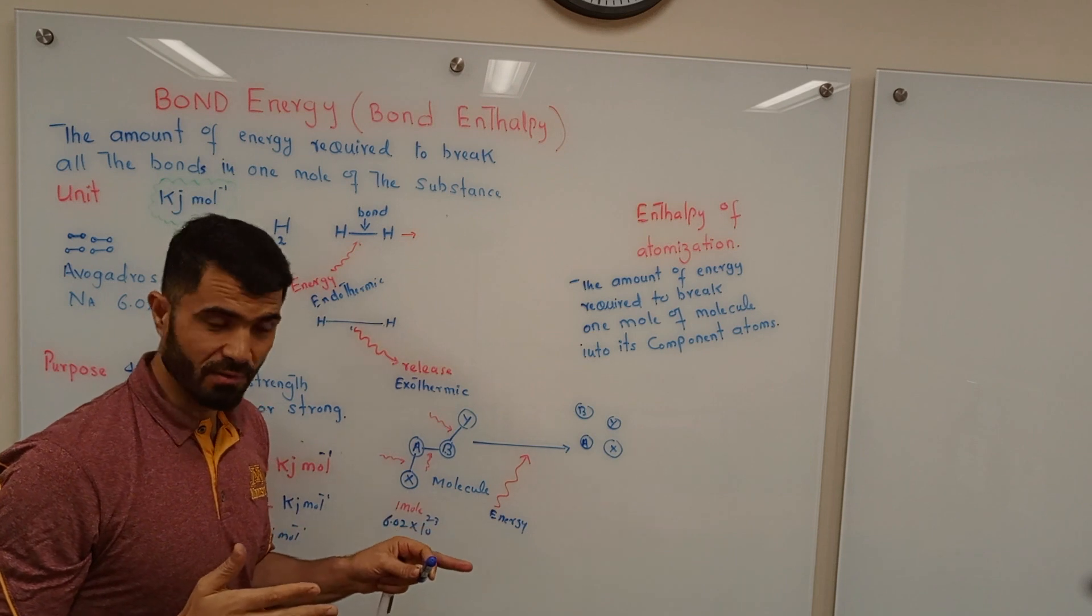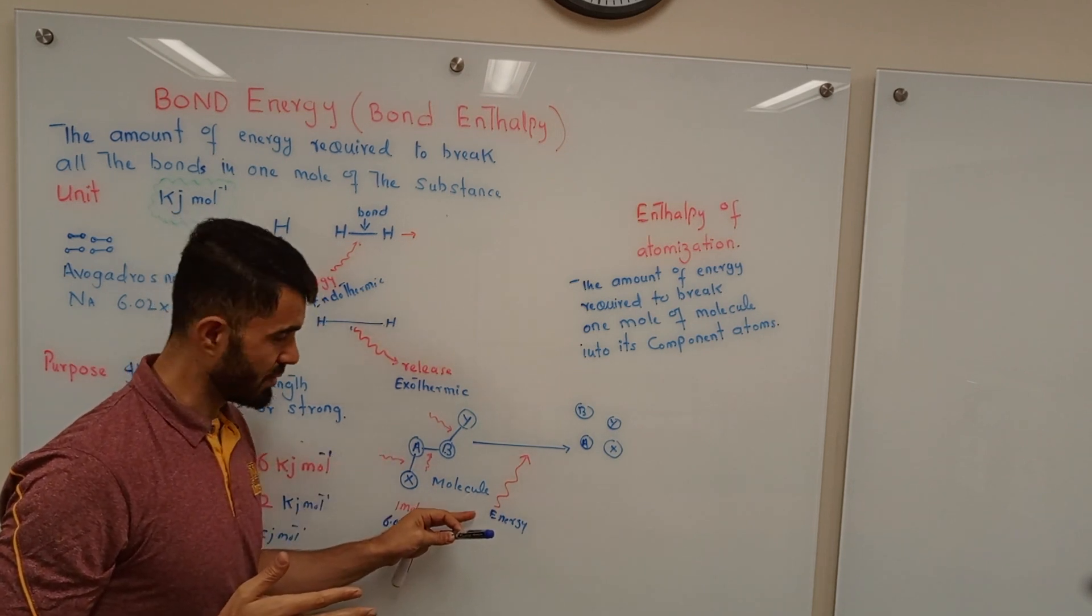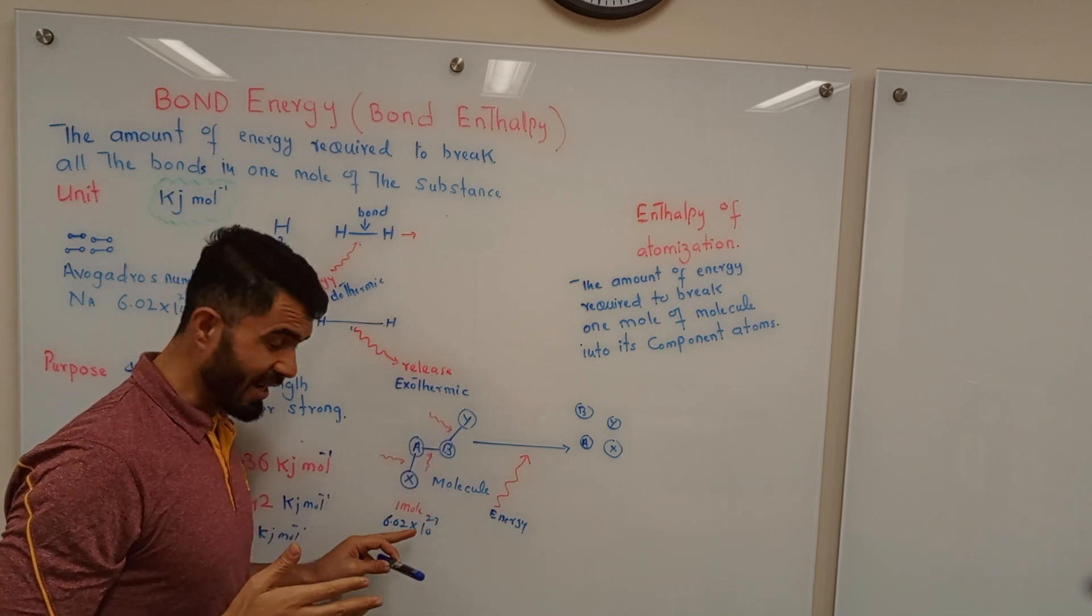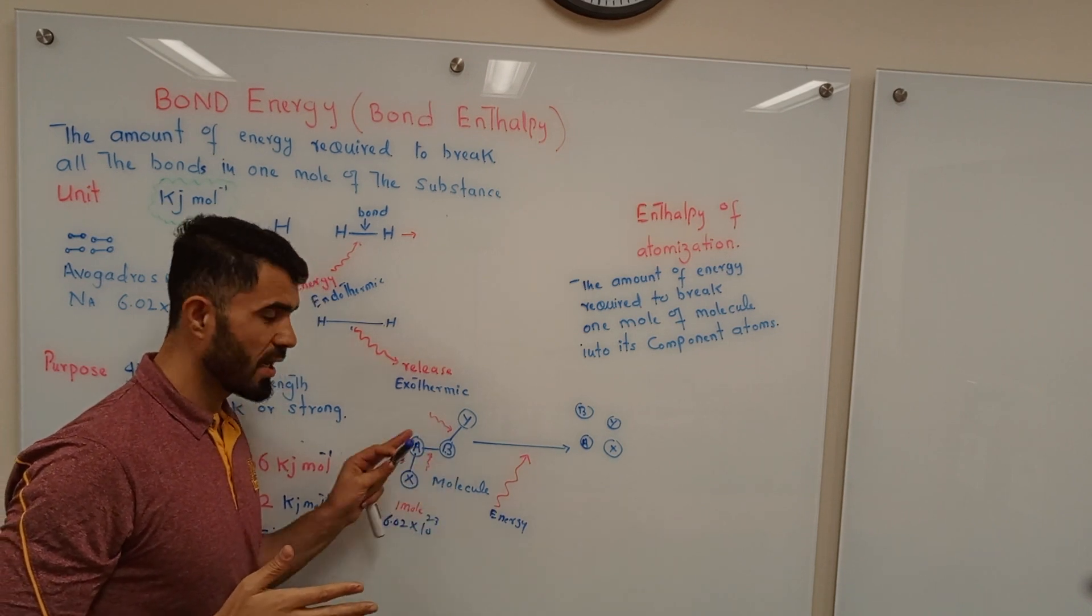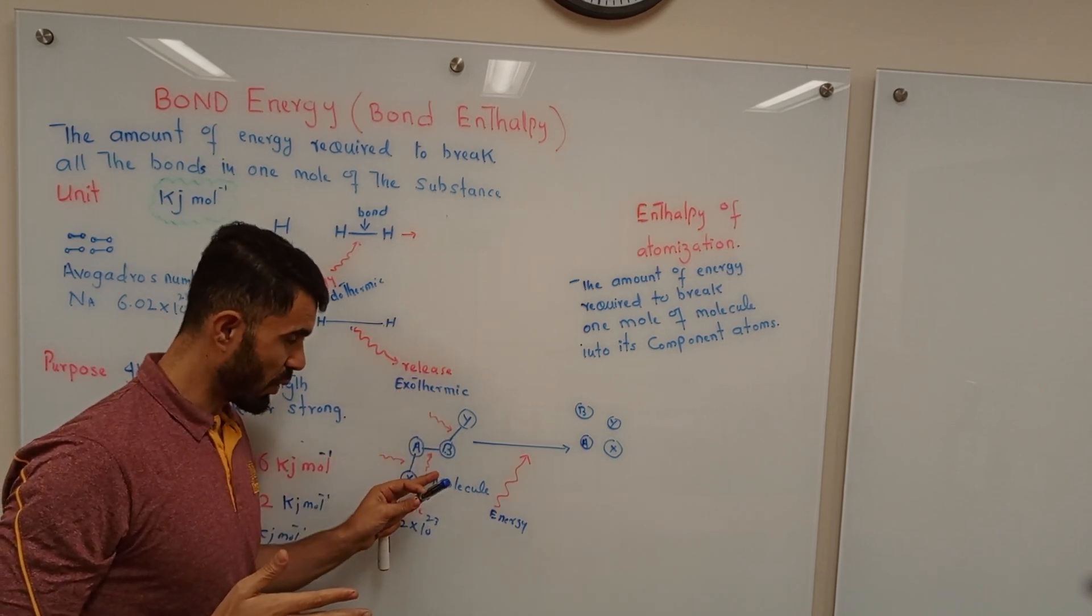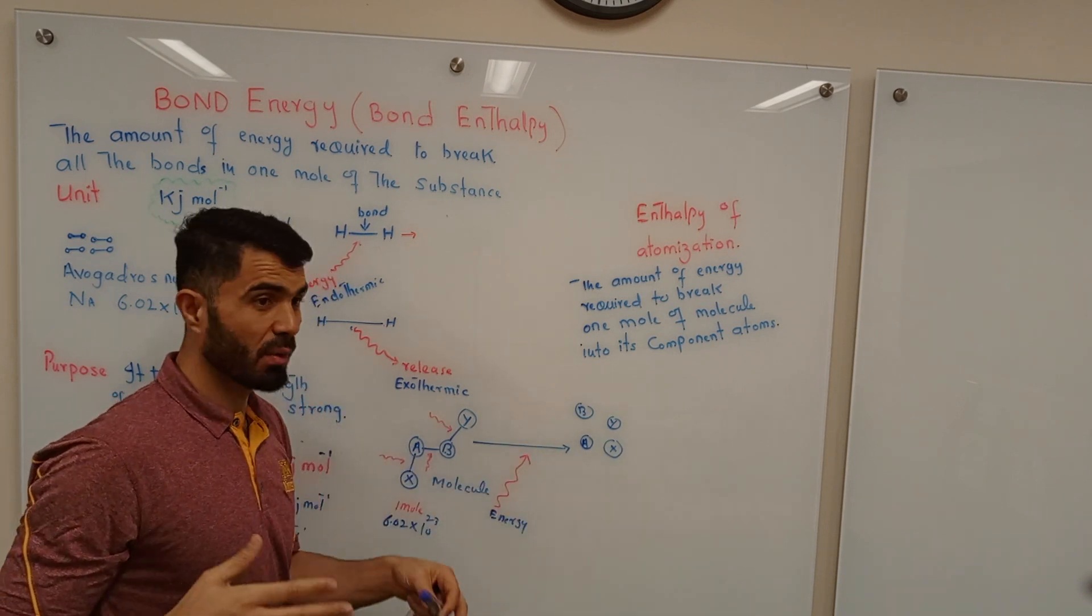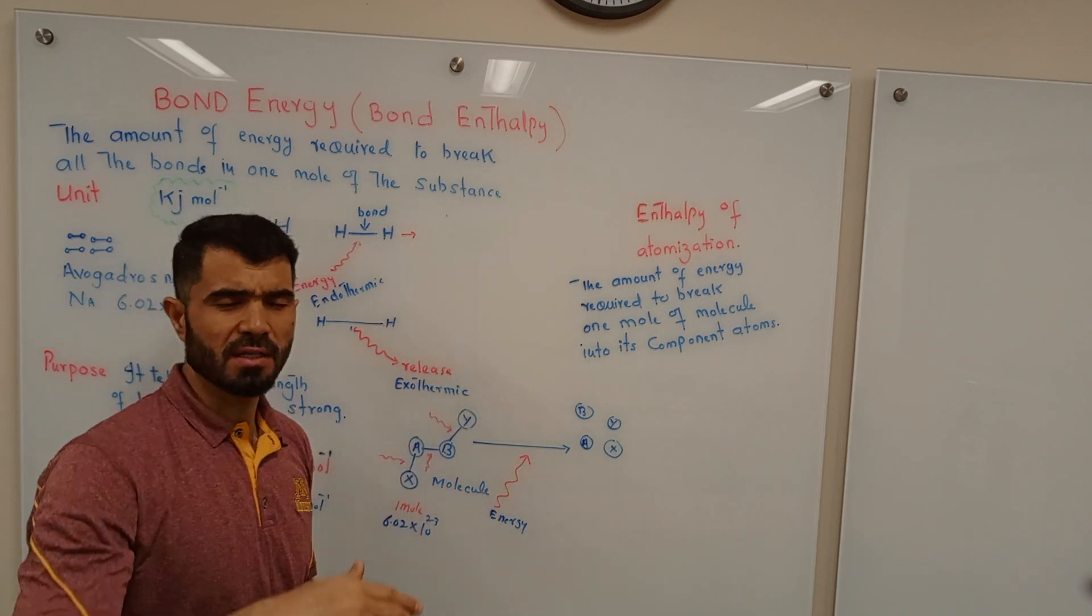Because in this case, again one molecule is not enough. You have to bring certain number of molecules, that is 6.02 into 10 raised to 23 molecules. You provide energy, and then all the bonds within these molecules, all these bonds once broken, you will be having atoms and atoms, atoms only. There will be no molecules. So this energy will be called enthalpy of atomization.